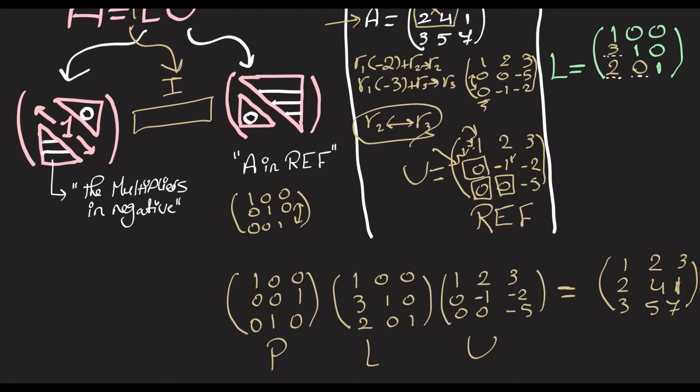Okay, now, permutation matrices generally follow, they are also orthogonal matrices, so they follow the fact that P transpose is equal to P inverse. And in some cases, such as when you interchange just two rows, like here, the matrix is symmetric. So, P transpose is equal to P, and it becomes that P is even equal to P inverse, and P squared is equal to I.